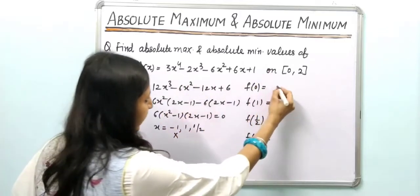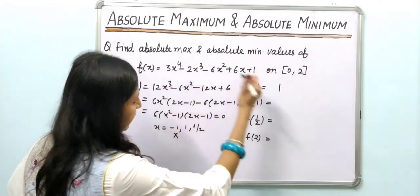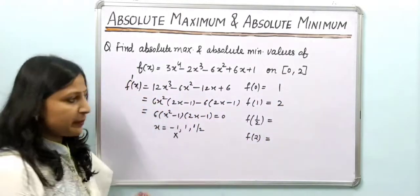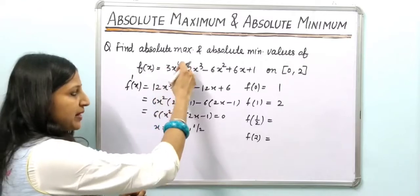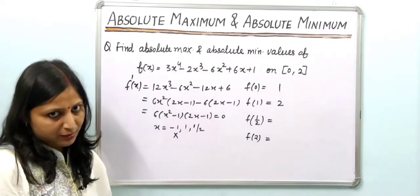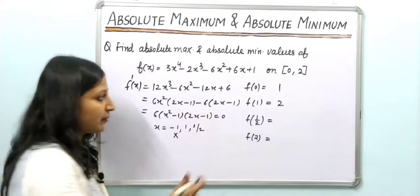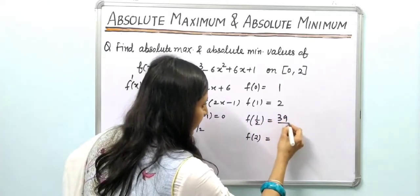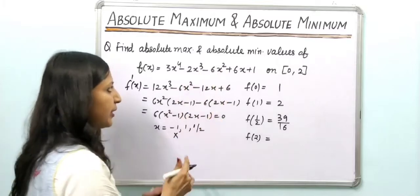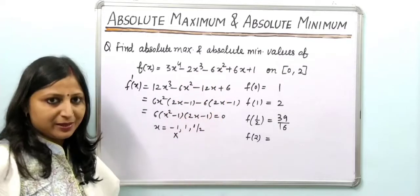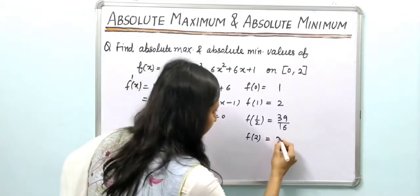Now let's find the function values. At x = 0, f(0) = 1. At x = 1, f(1) = 1 − 6 − 5 + 1 = 2 (approximately). At x = 1/2, substituting into the function gives f(1/2) = 39/16. At x = 2, substituting gives f(2) = 21.